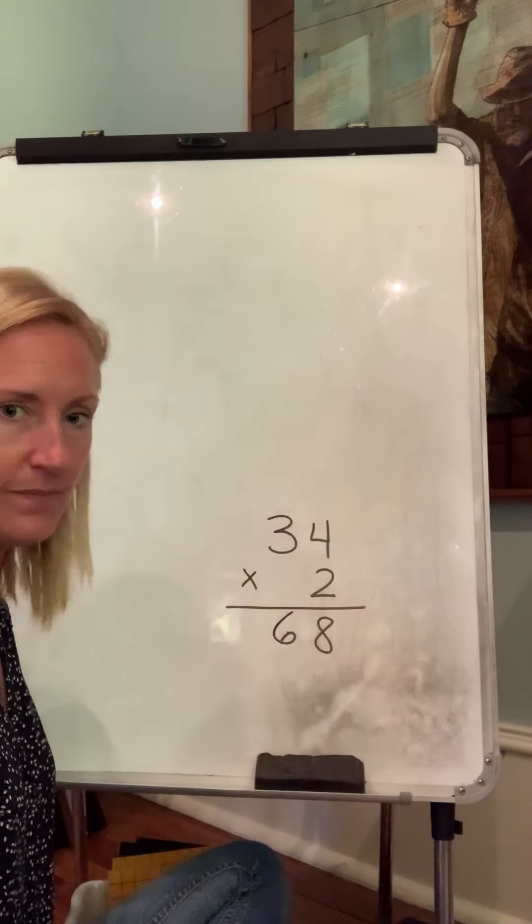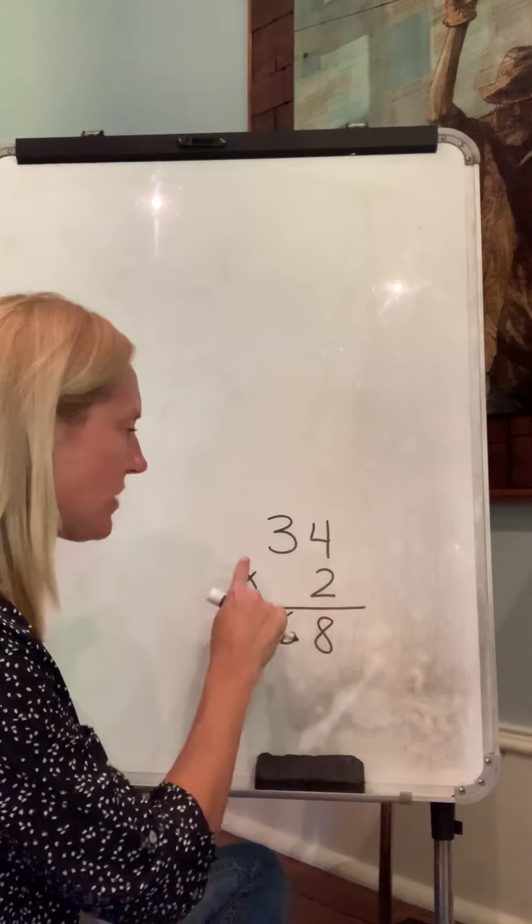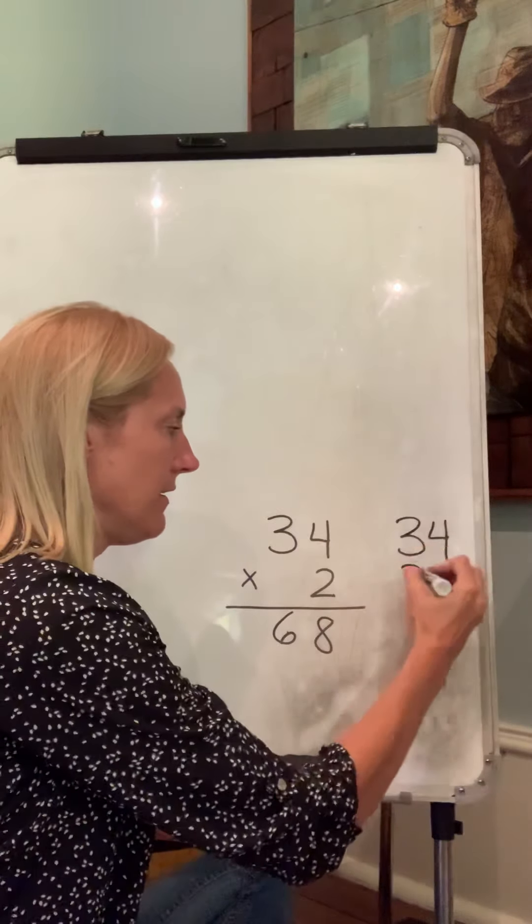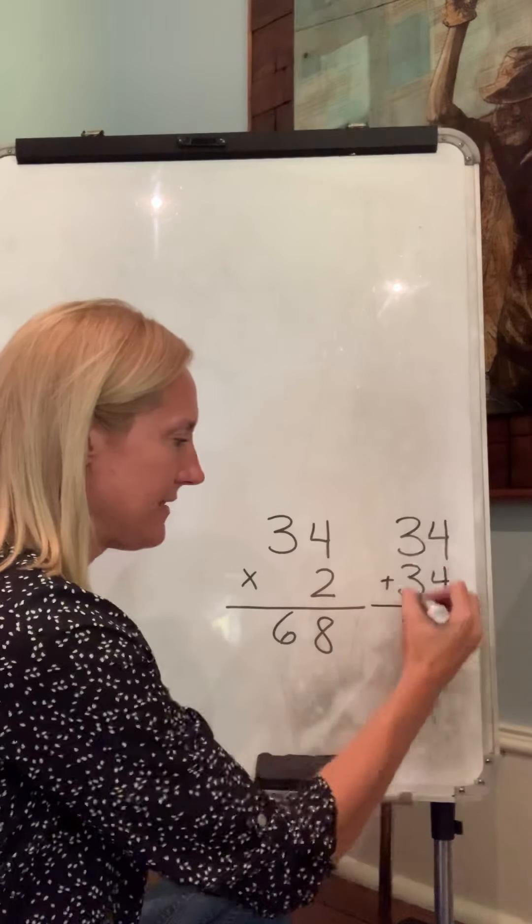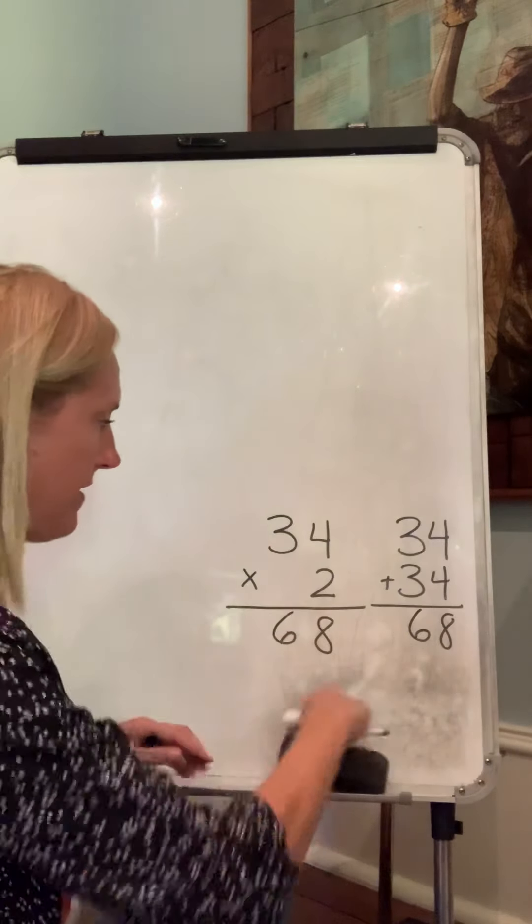Now, this makes sense to me because two times thirty-four means we have two thirty-fours that we're adding together. Thirty-four plus thirty-four equals sixty-eight. So this makes sense, it's working.